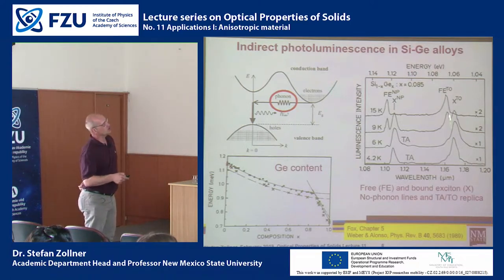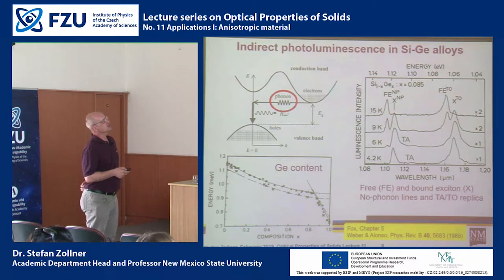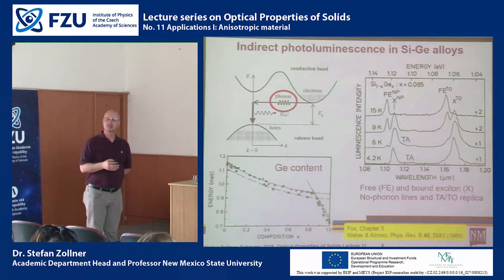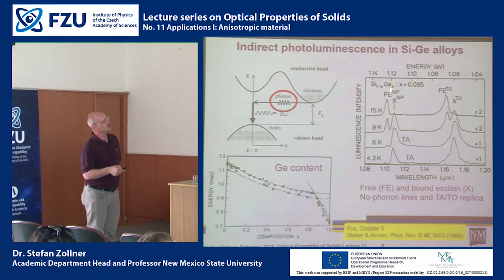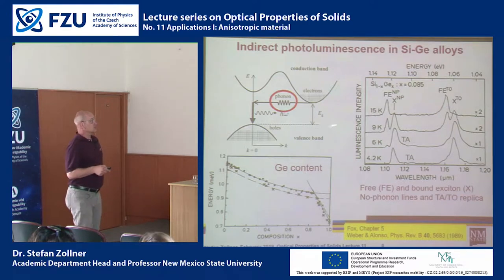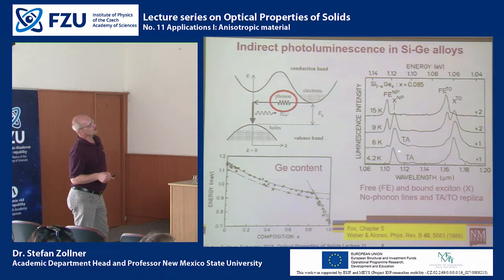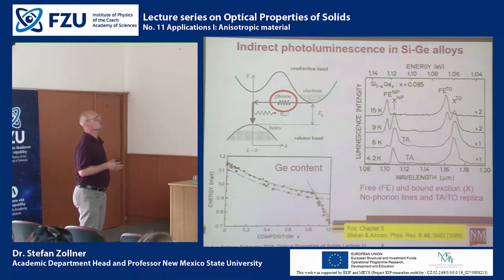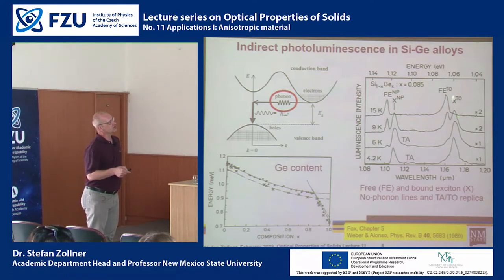In addition to these phonon replicas, we also have no-phonon peaks. In a perfect crystal there would be no no-phonon line, but in a semiconductor alloy the translational symmetry is broken, so we also see a no-phonon peak. Looking at the temperature dependence, the energy changes and at 9 Kelvin there are actually two peaks: the peak labeled X is a defect peak, and the peak FE is the free exciton that we're interested in for today's lecture.